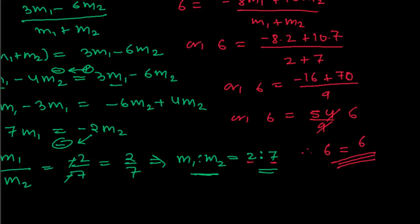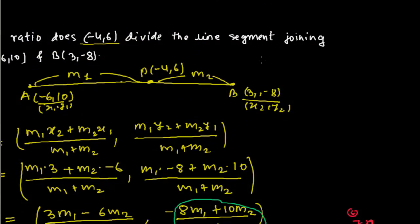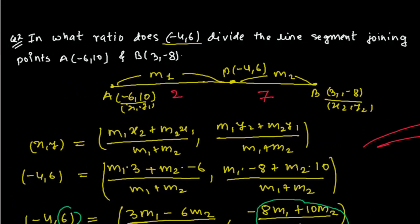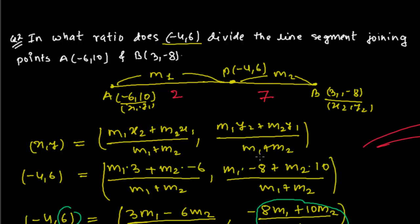Since the y-part is verified, our required ratio is M1 : M2 = 2 : 7. We got the value of this ratio — it is 2 : 7. In the next video, we will be doing some more problems related to the section formula with different types and models of problems, which will really build a good concept in section formula. See you in the next video. Bye-bye!